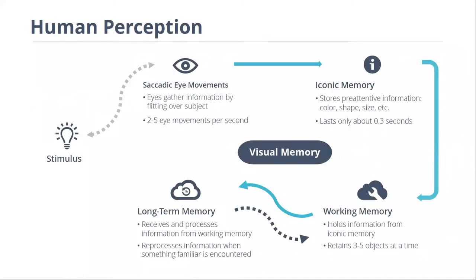It's also helpful when creating data visualizations to keep in mind how our visual memory works. When we're looking at something, our eyes are actually moving back and forth very quickly — about two to five times a second. While they're doing that, we're storing pre-attentive information about color, shape, size, and things like that. We spend about three seconds gathering that into what researchers call iconic memory, and we can hold pre-attentive information for multiple objects at a time.